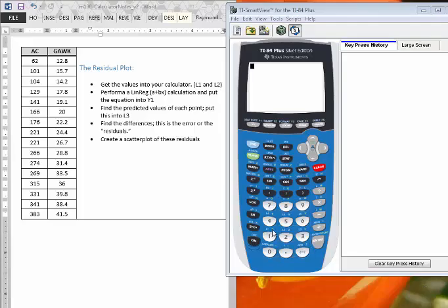This is a quick video on making a residual plot. So the first thing we want to do is we want to get AC and the GAWK into our calculators, into list 1 and list 2. So you can enter that in yourself, or if you have it saved already, let me take this opportunity to show you how to recall that.